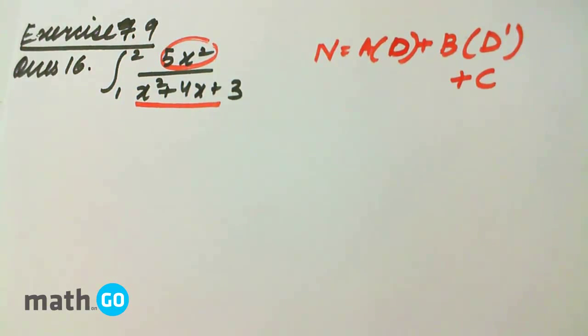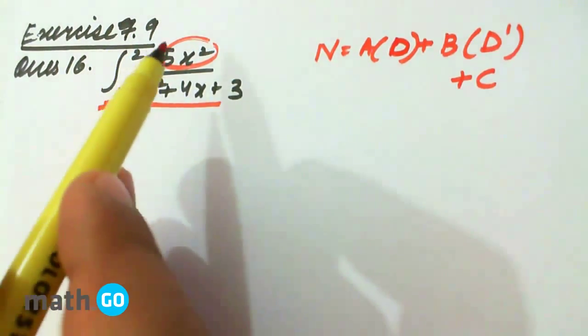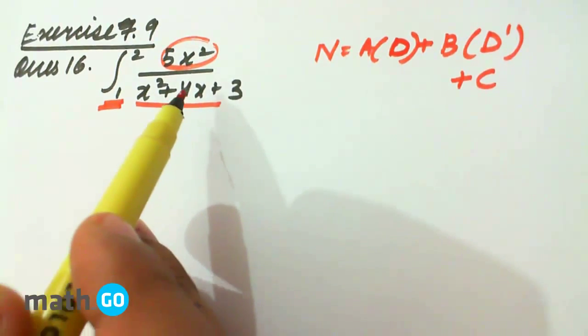Exercise 7.9, question number 16. Now, in this question we see, first of all, it is a question of definite integral - we are given the limits. And secondly, numerator and denominator both have a quadratic expression. How do we do this type of question?